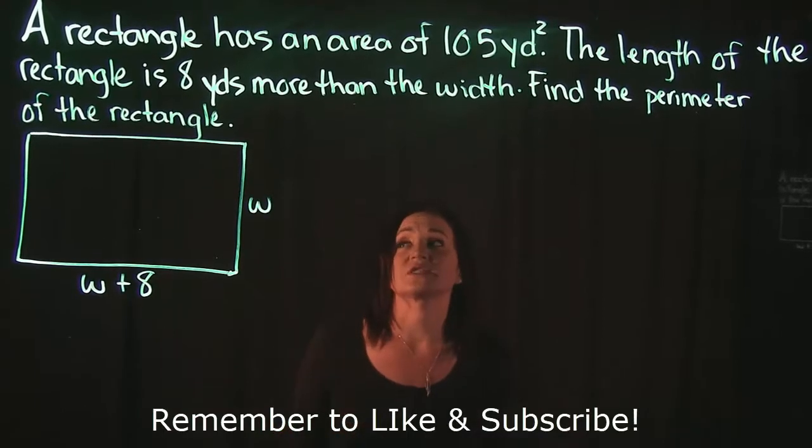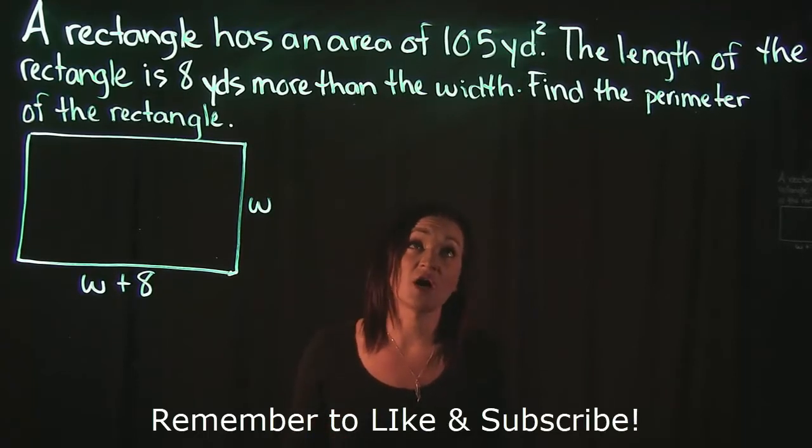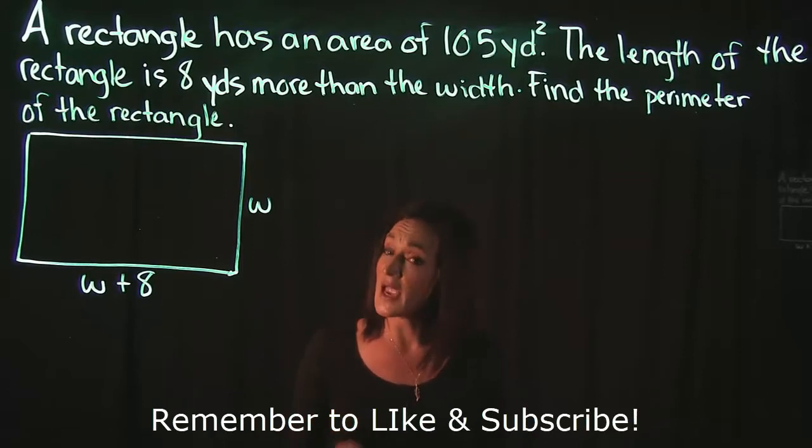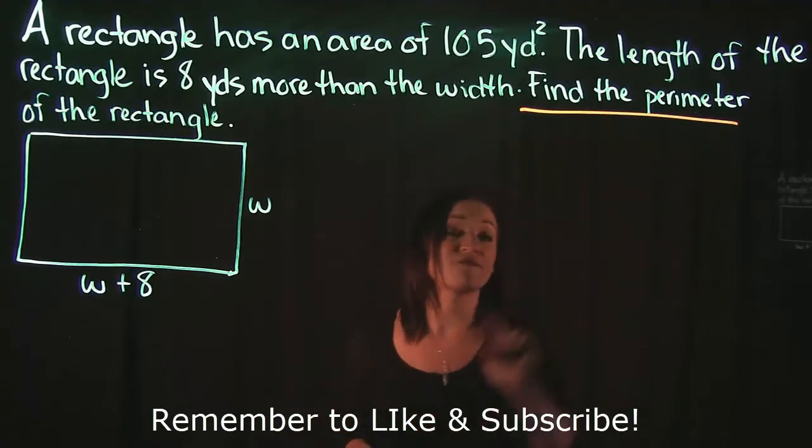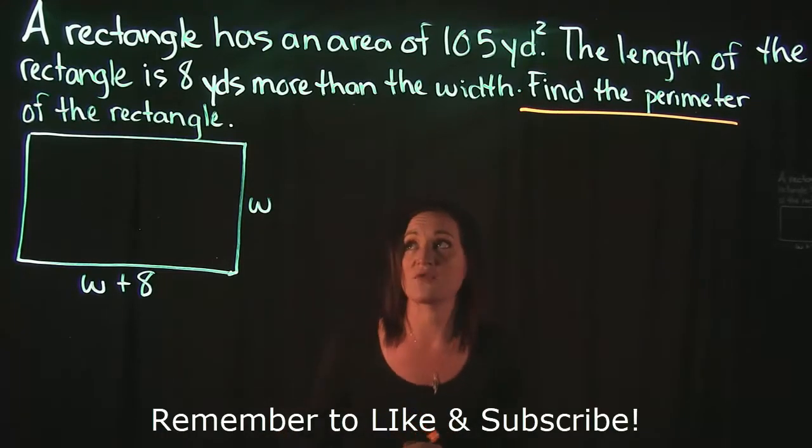Now we've got to be careful because the first line reads that the rectangle has an area of 105 yards, but the question asks us to find the perimeter. So we need to make sure that we're careful about that.